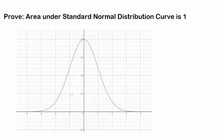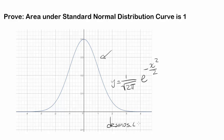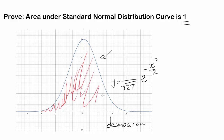In this video, we are going to prove that the area under the standard normal distribution — precisely this curve, represented by y equals 1 over the square root of 2π times e to the negative x squared over 2 — is equal to exactly 1. We want to prove that all of the area underneath this curve is 1.